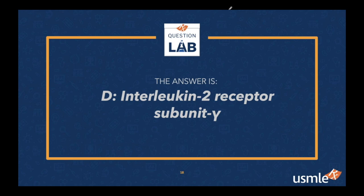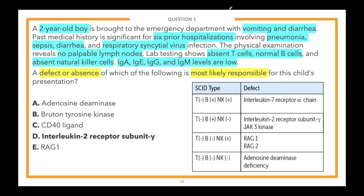Definitely a tough question. So what is this patient's condition? This patient likely has SCID — severe combined immunodeficiency. He has low immunoglobulins across the board: low IgA, IgE, IgG, and IgM — hypogammaglobulinemia — along with recurrent and opportunistic infections. There are also absent T cells and absent natural killer cells, plus a lack of lymphoid tissue on exam — the physical exam showed no palpable lymph nodes at all, which is different from lymphadenopathy where you have enlarged nodes.